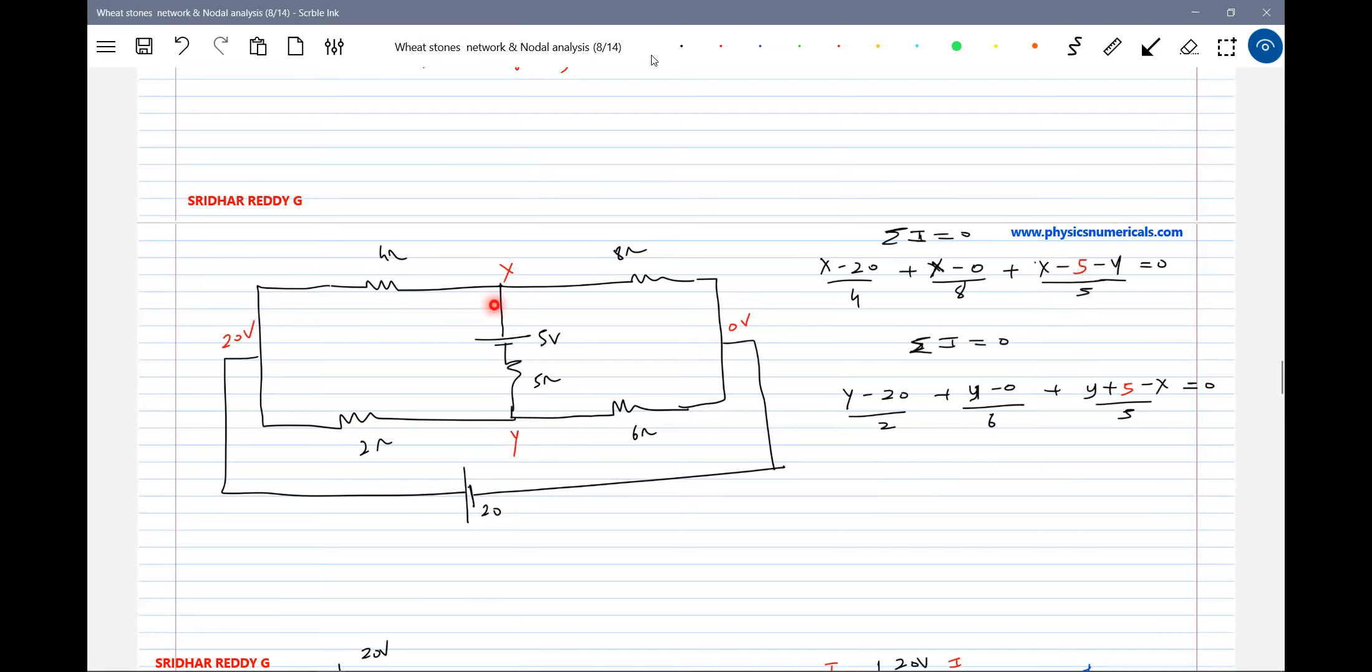How you write potential difference: VX minus 5 volt minus some current I times 5 ohm. I'll help you understand how we are writing that one. The loop equation: VX minus 5 volt minus 5*I3 minus VY equal to zero. So I3 is equal to VX minus VY minus 5 divided by 5. VX is what? X.